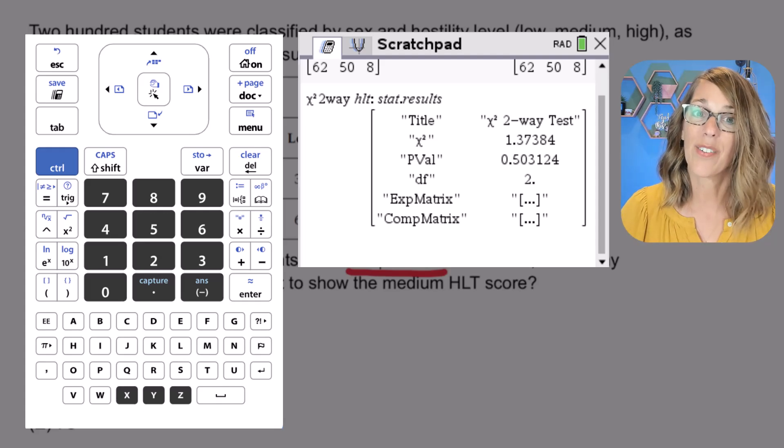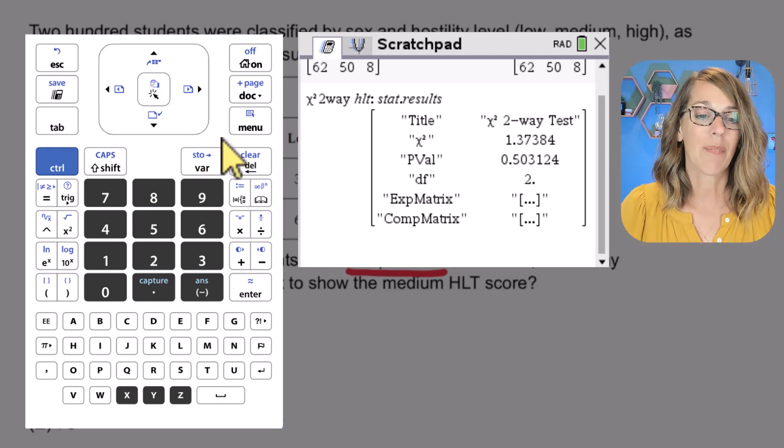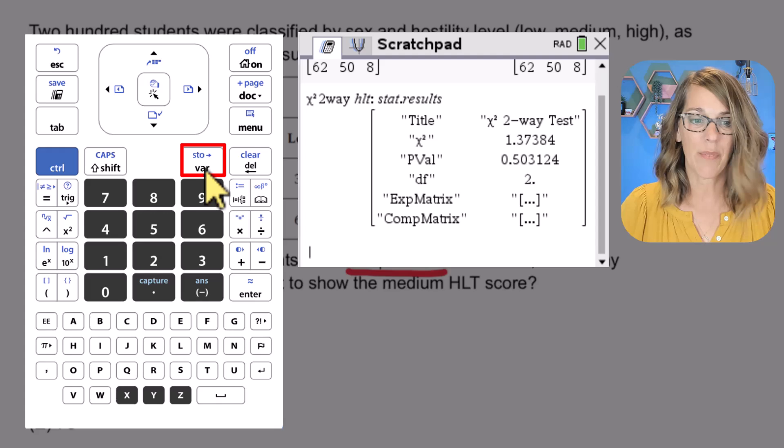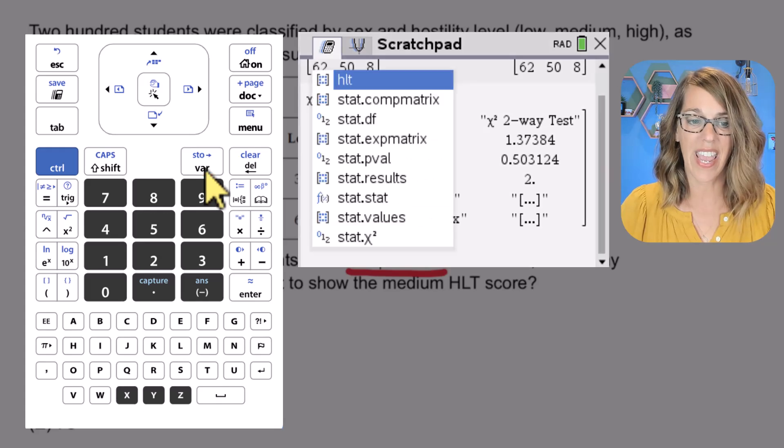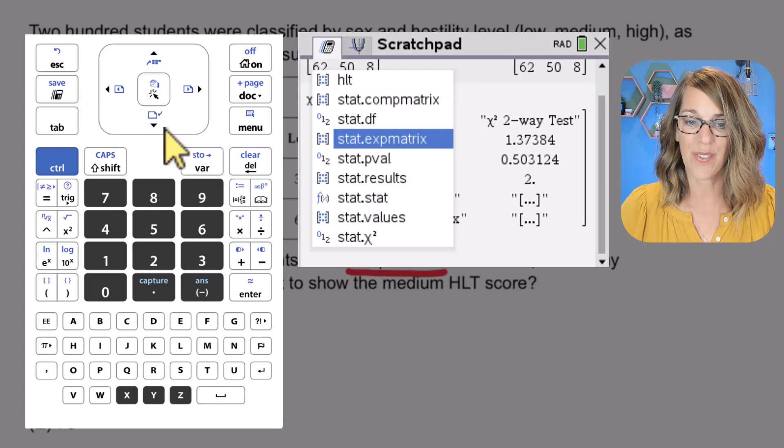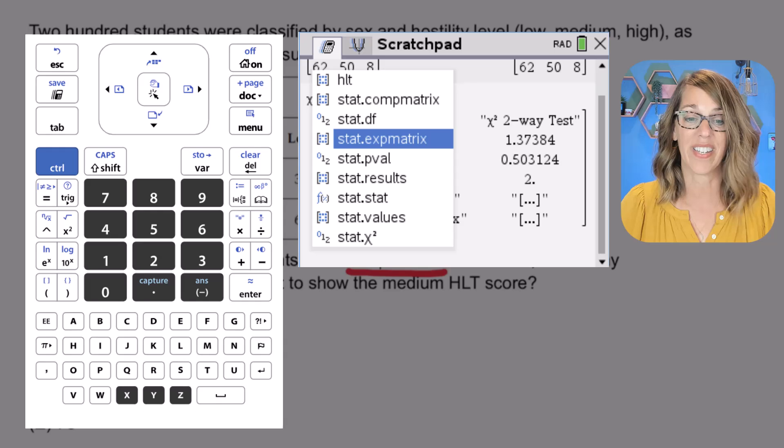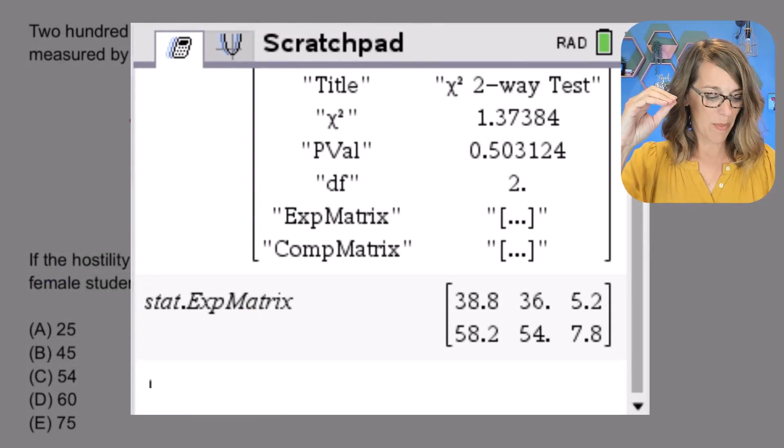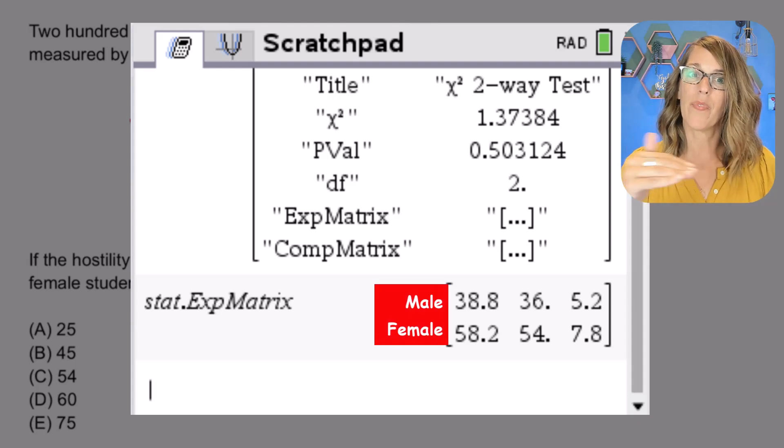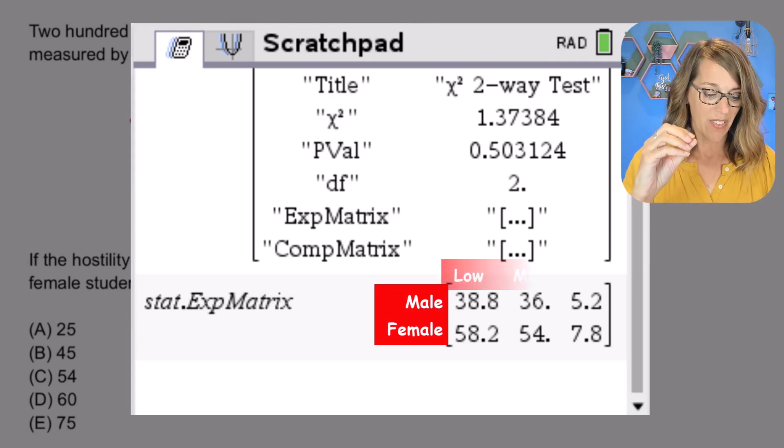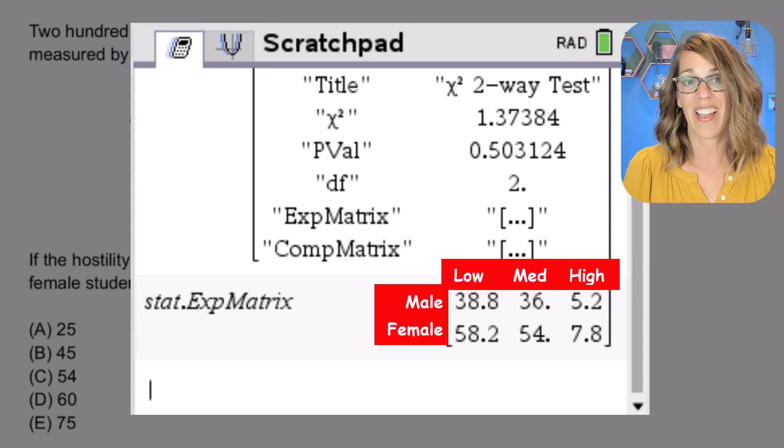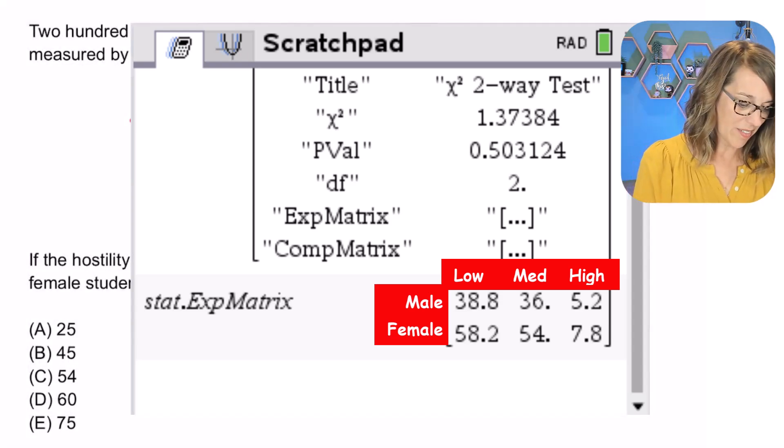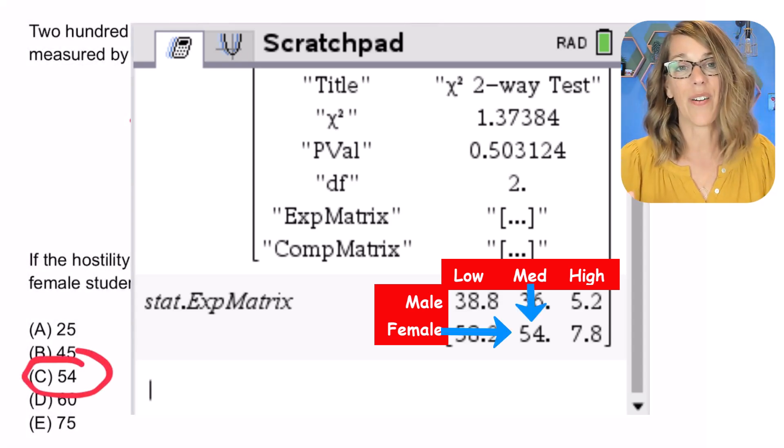The expected matrix is now stored as a variable. So I'm going to go to that same variable key, hit that variable key. And if you arrow down, you will see it there, the fourth one down. I'm going to choose that and then hit enter. These are my values. Remember that we had male and female for the first and second rows, and then we had low, medium, and high for the columns, which means that 54 is our answer.